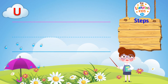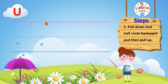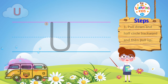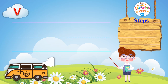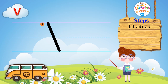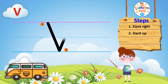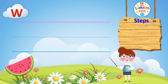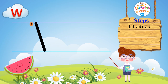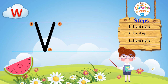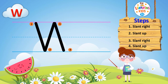Learn to write uppercase letter U. Step 1: pull down and half circle backward. Step 2: slant right. Step 3: slant right. Step 4: slant up.